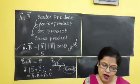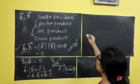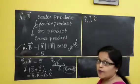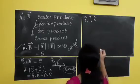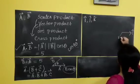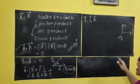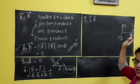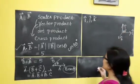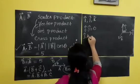Next, consider the scalar product of orthogonal unit vectors. We have three orthogonal unit vectors: I cap, J cap, and K cap. I cap is along the X axis, J cap is along the Y axis, and K cap is along the Z axis. Now, I dot J — the angle between I and J is 90 degrees, so I dot J equals zero. Similarly, J dot K equals zero, and K dot I equals zero.